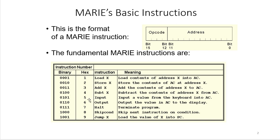INPUT and OUTPUT are instructions to take input from the keyboard and output to the monitor to display the result. The number 7 is HALT, which terminates the program when we reach the end. For more advanced instructions, SKIPCOND skips the next instruction based on the condition of the value in the AC. JUMP X loads the value of X into the PC to execute the instruction at that specific address.